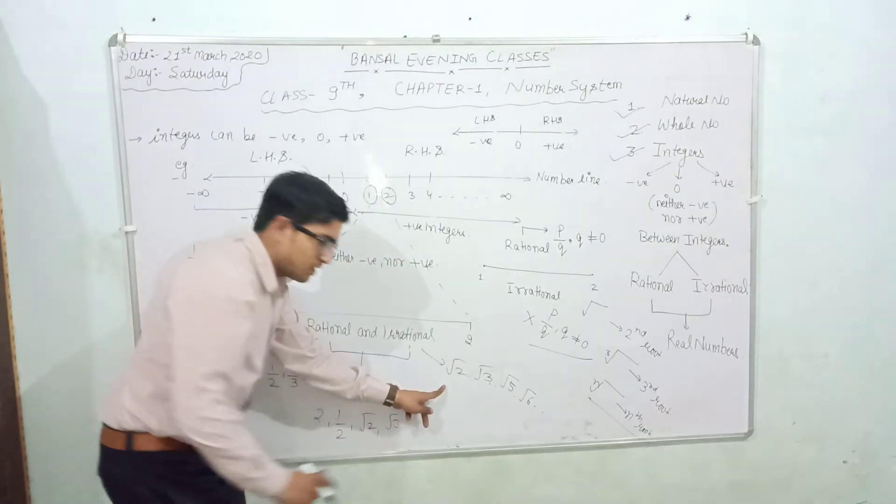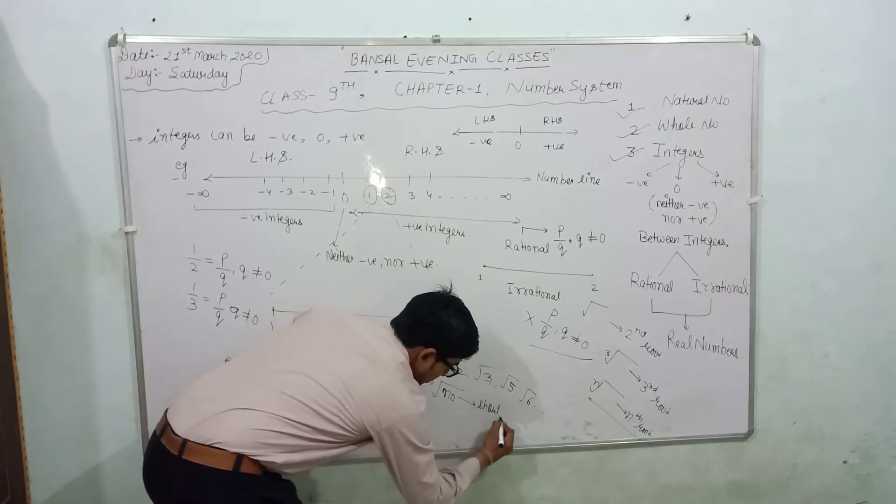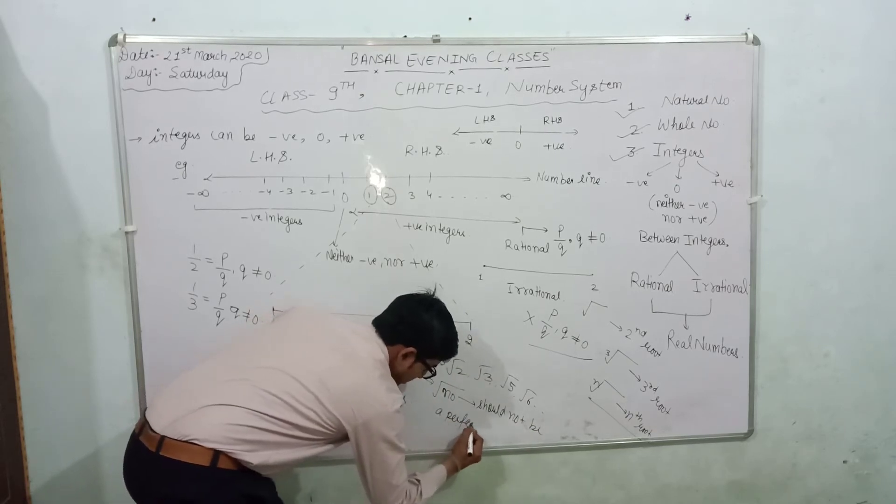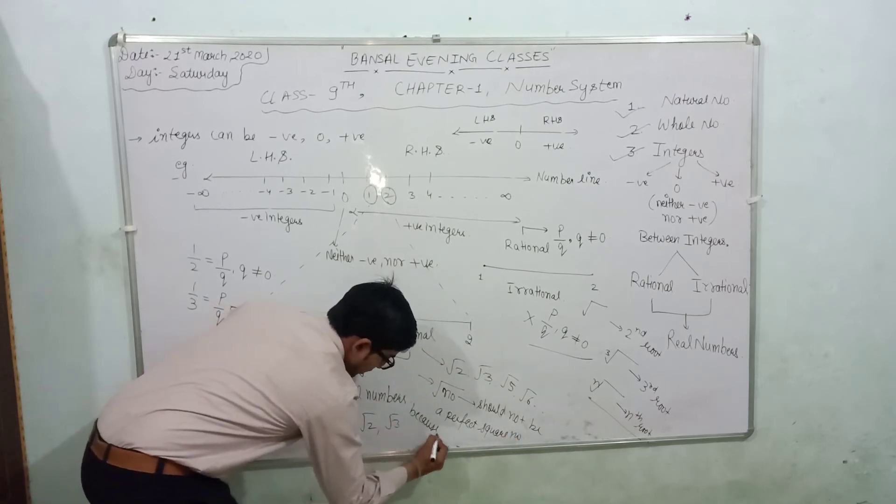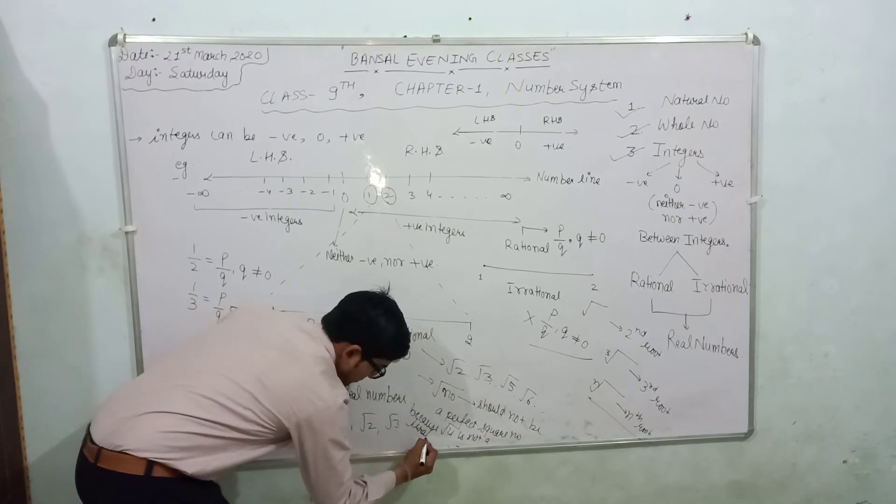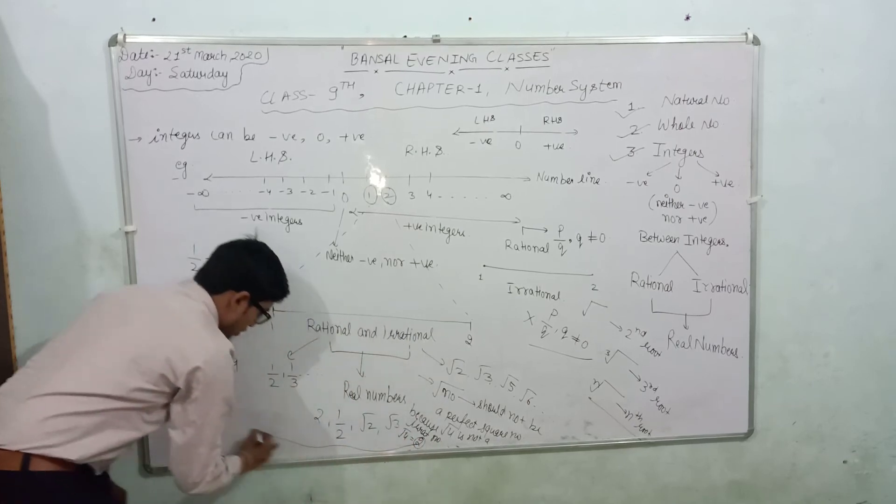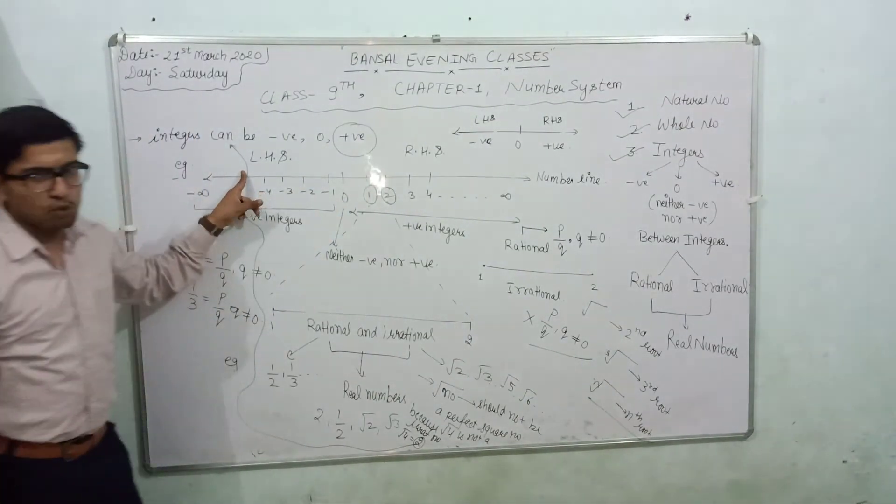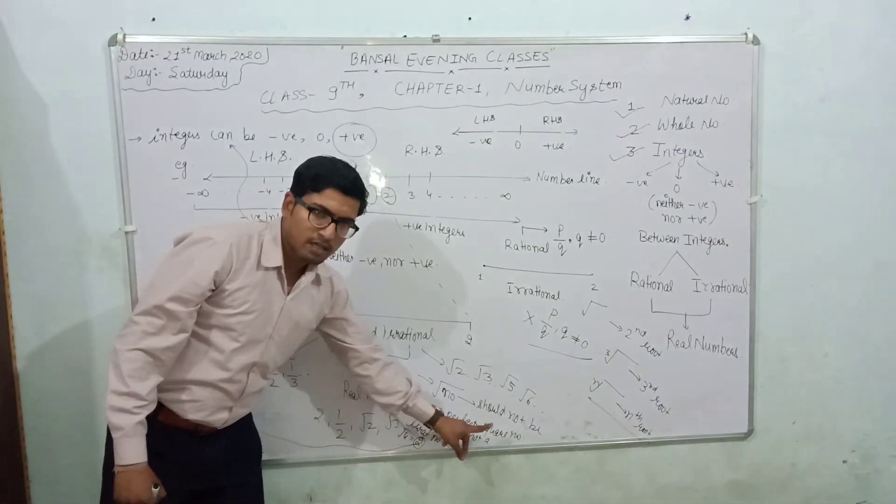All these are irrational numbers, because there is a condition that the number in the root should not be a perfect square number. Because root four is not an irrational number. So the number in the form of root should not be a perfect square number.